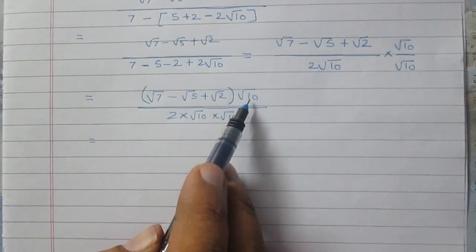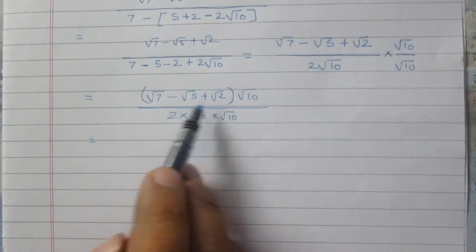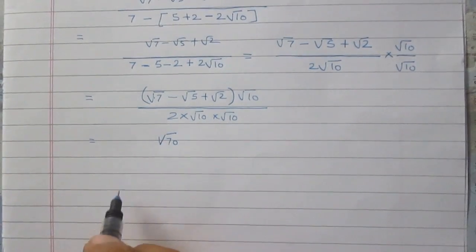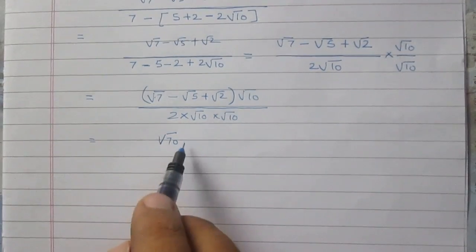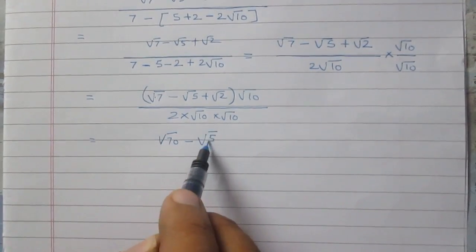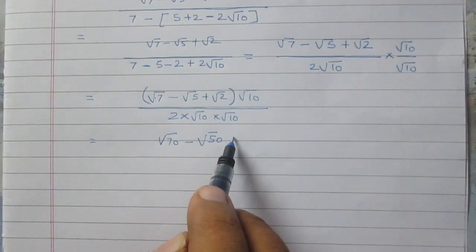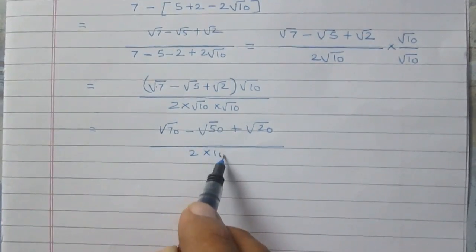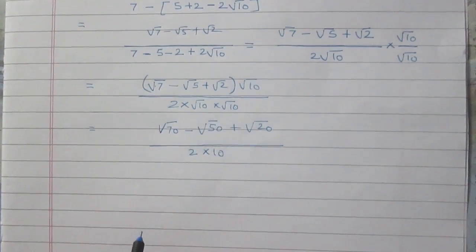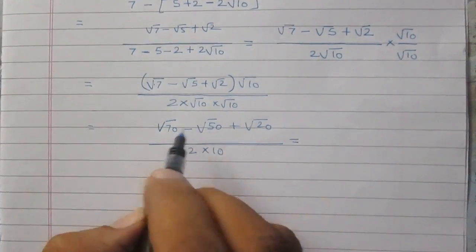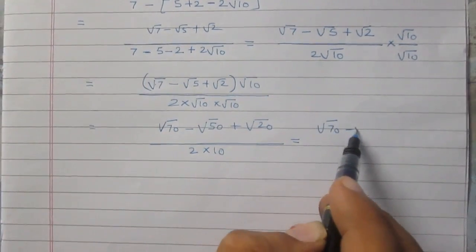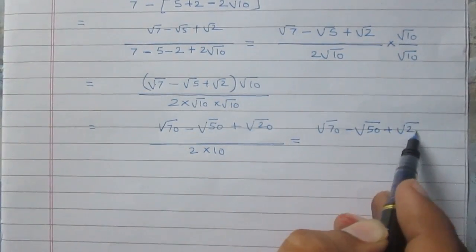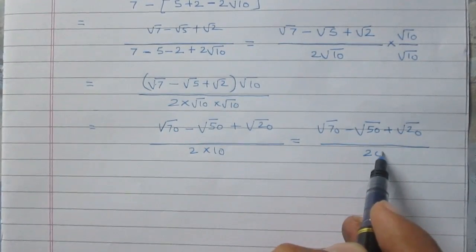Square root 10 multiplies each term in the numerator: square root 7 times square root 10 is square root 70, then minus square root 5 times square root 10 gives square root 50, then plus square root 2 times square root 10 gives square root 20. The denominator is 2 times 10, which equals 20. So we have (√70 - √50 + √20) divided by 20.